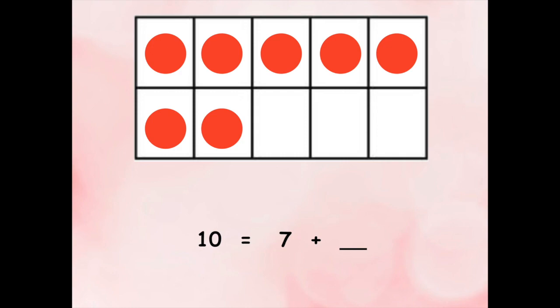Let's check out our math story. A 10 frame is a great tool to find the missing part of 10. Look, I already have seven counters. You can see that because there are seven red counters. To find the missing part of 10, all I need to do is figure out how many more counters I need to fill up the 10 frame.